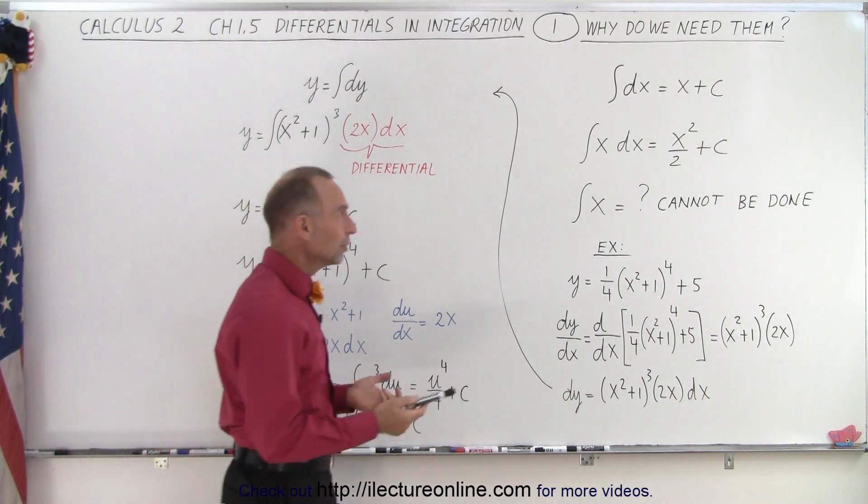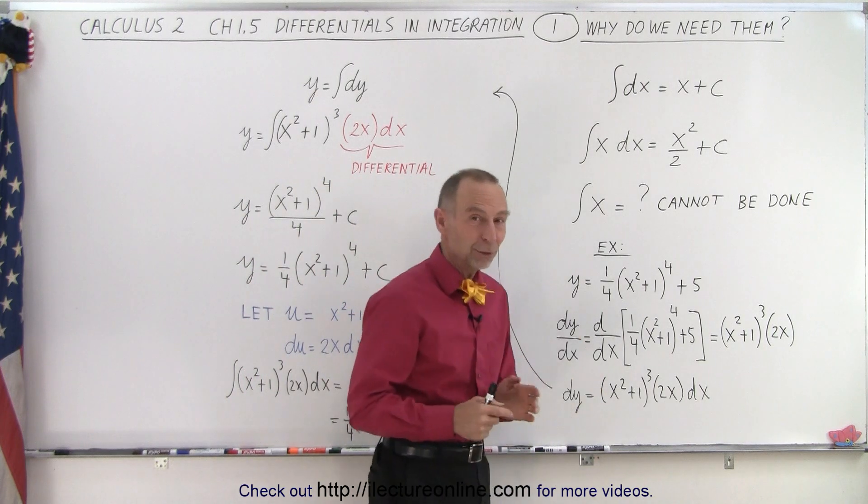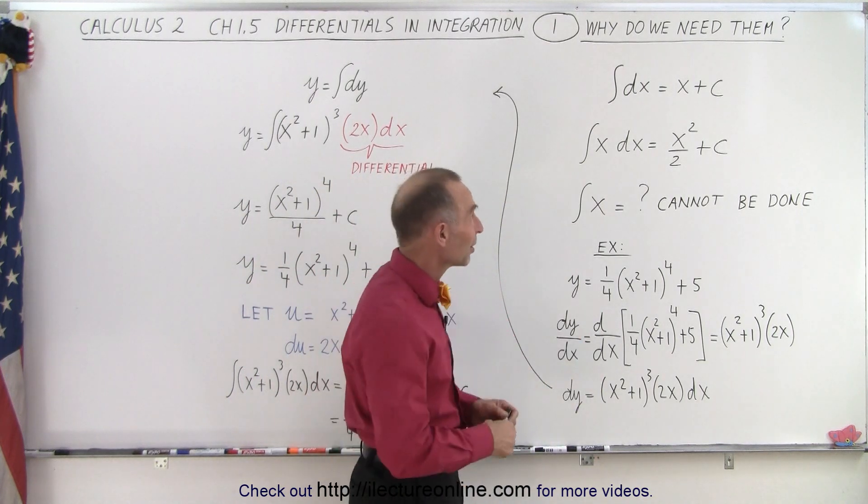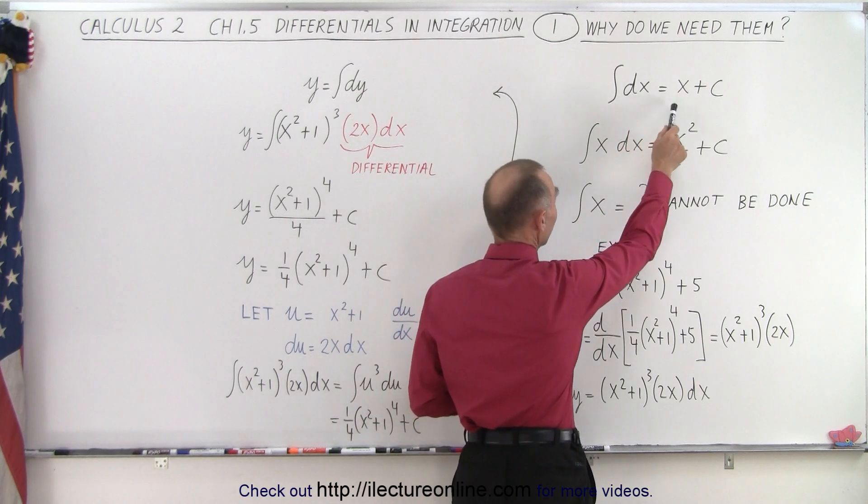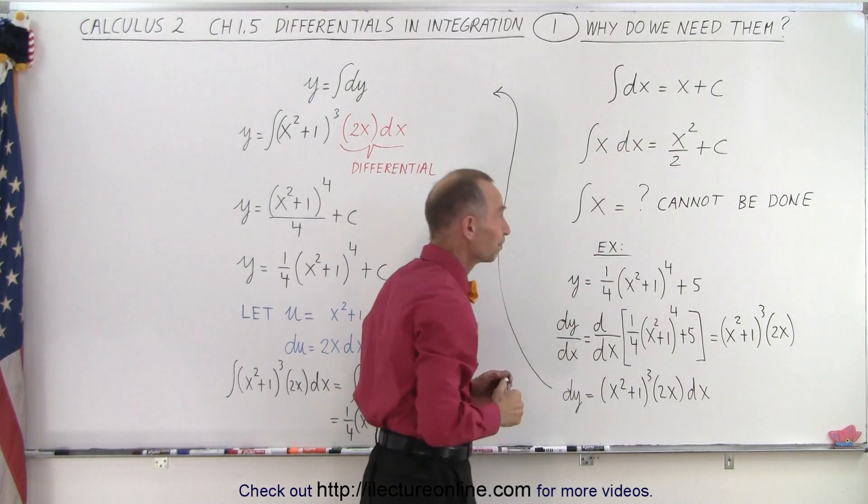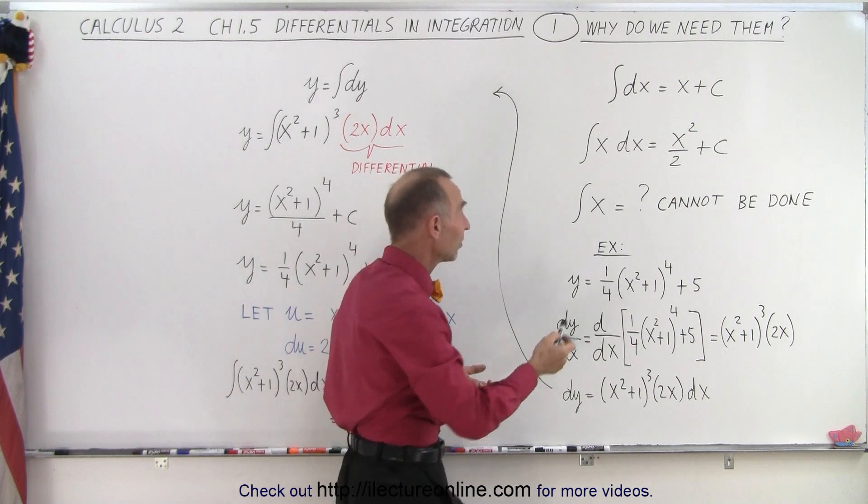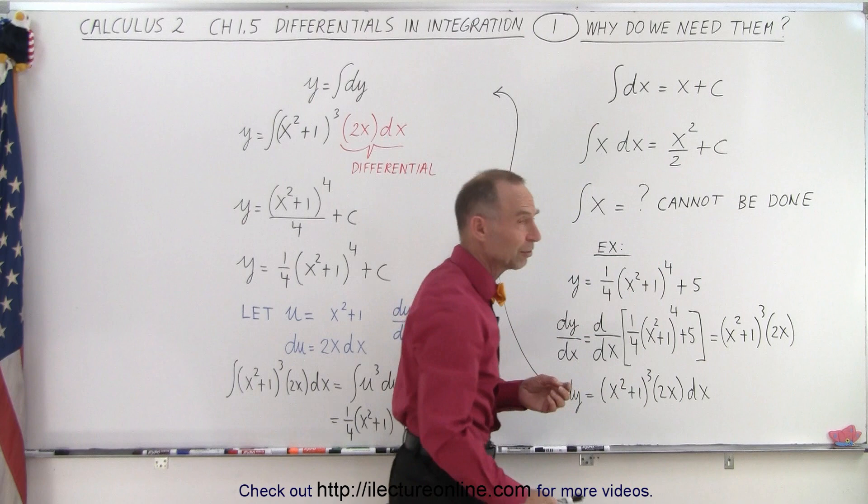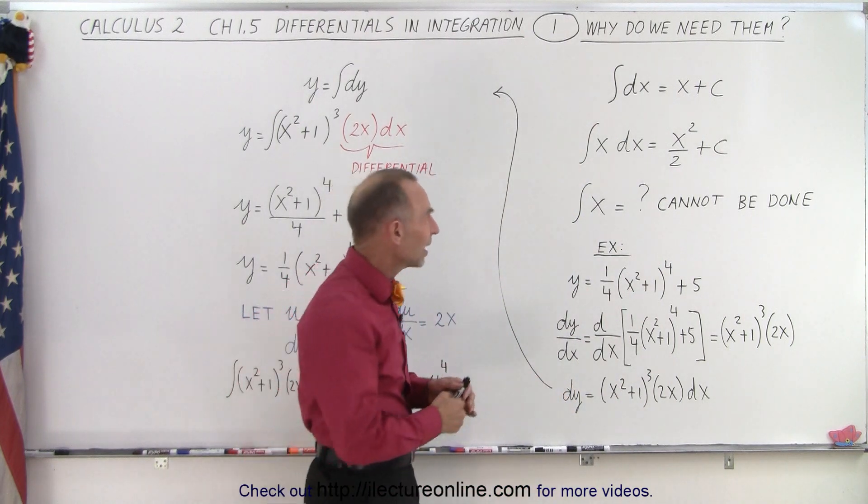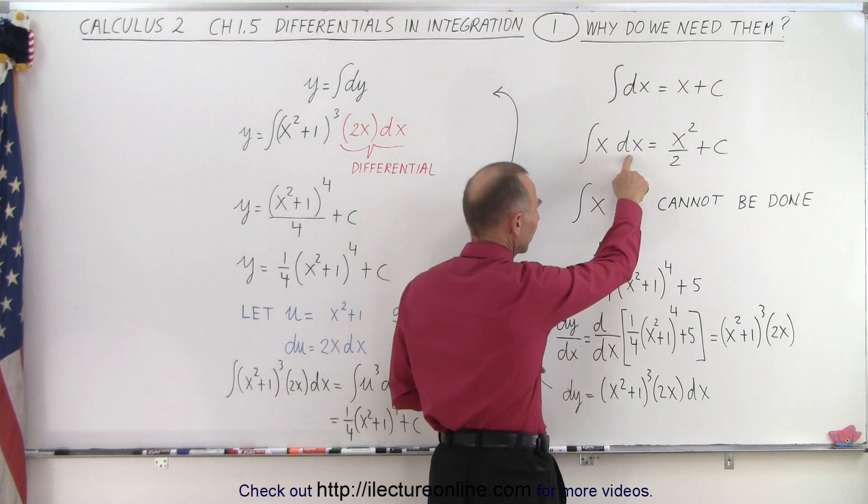So everybody pretty well knows that, well at least those who have studied some integration, some calculus of integration, that the integral of dx is equal to x plus a constant of integration. And if we see something like this, the integral of x times dx, well we know that's x squared over 2 plus a constant of integration. We really never give it any thought as to why that dx is there.